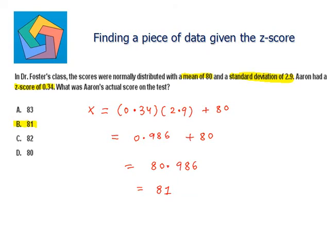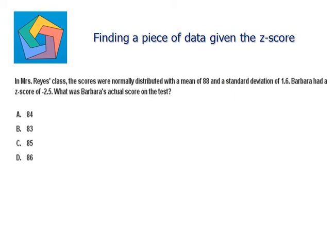Next problem. In Mrs. Reyes' class, the scores were normally distributed with a mean of 88 and a standard deviation of 1.6. Barbara had a z-score of negative 2.5. What was Barbara's actual score on the test?